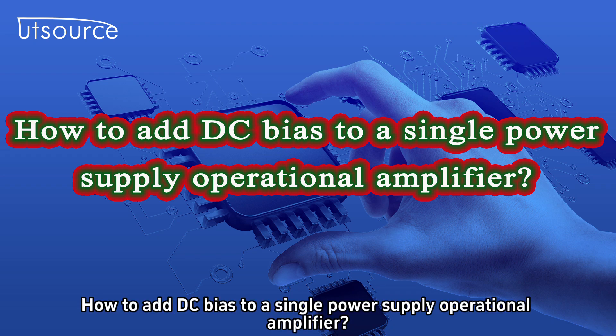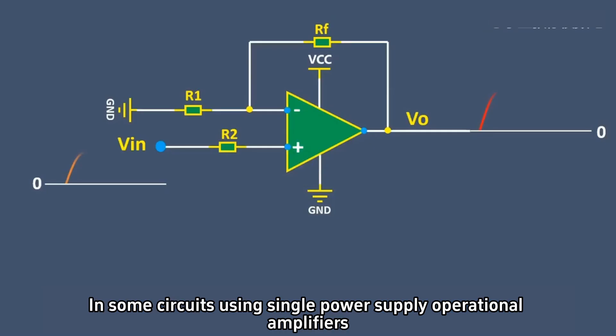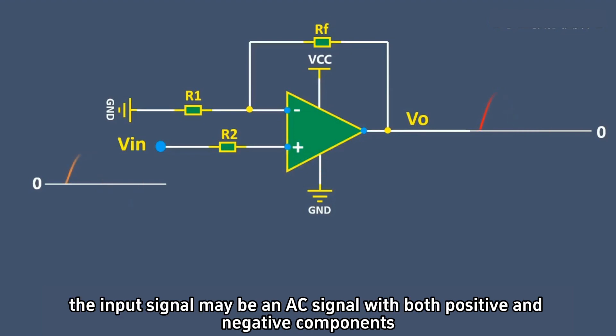How to add DC bias to a single power supply operational amplifier? In some circuits using single power supply operational amplifiers, the input signal may be an AC signal with both positive and negative components.